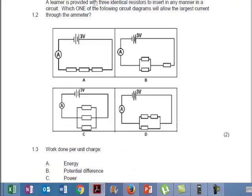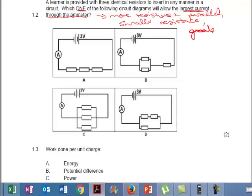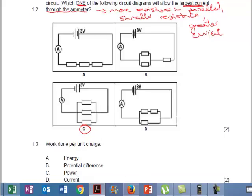Now it says, A learner is provided with three identical resistors to insert in any manner in the circuit. Which one of the following circuits will allow the largest current through the ammeter? Now the nice thing about this is that this is actually theory. And we know that the more resistors in parallel, the smaller the resistance and therefore the greater the current. So which one of these is going to have the greatest current? The one with the most resistors in parallel. So that has to be C. Easy peasy.